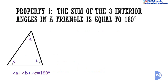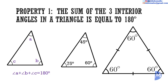Property 1: The sum of the three interior angles in a triangle is equal to 180 degrees. The sum of angles A, B, and C is 180 degrees. These are two examples.